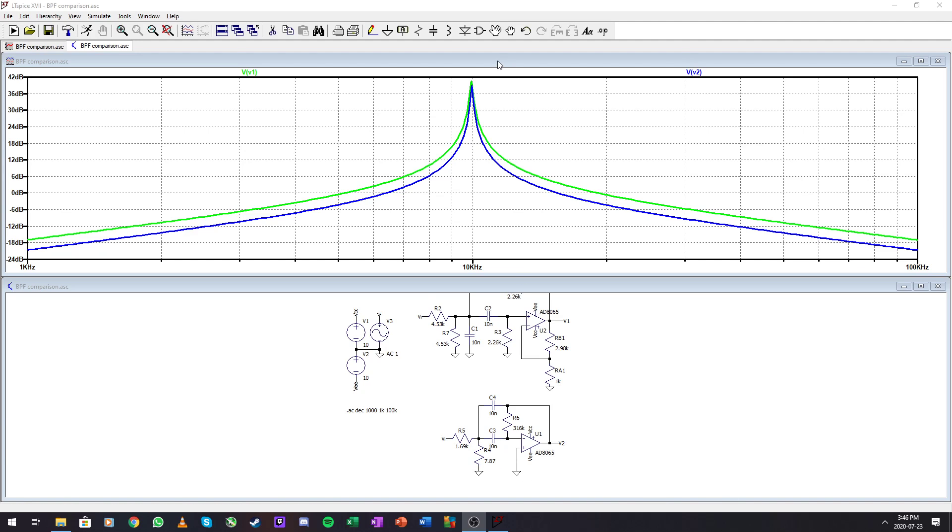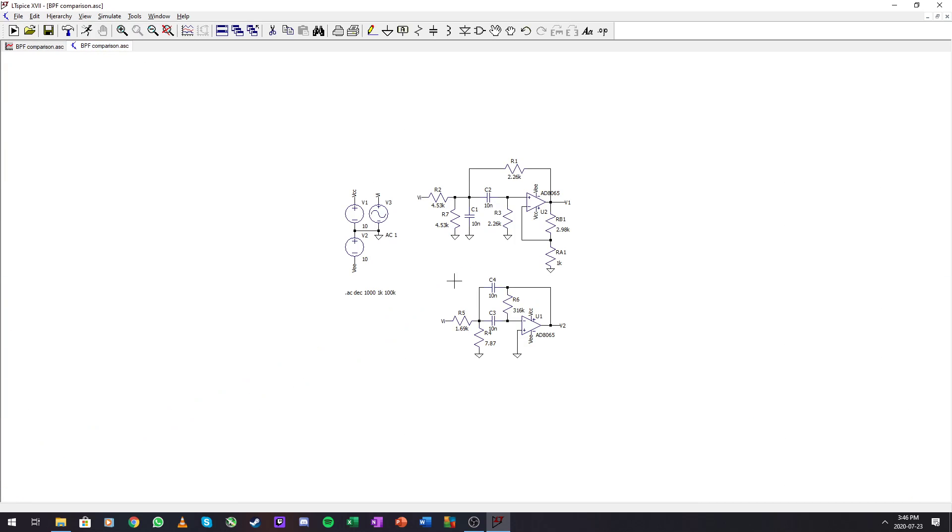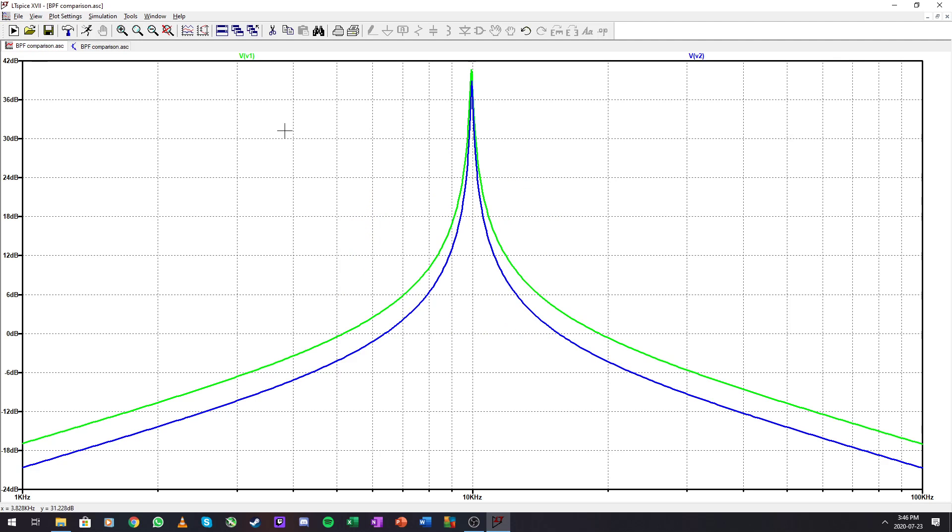I corrected this resistor value here to match with the previous simulation. Now we can see that if we could increase the gain a little bit, they will almost match perfectly. But the multi-feedback is cutting off a little bit quicker than the KRC. But they are really similar. So if you need a bandpass filter, I would rather go with the multi-feedback because it's not going to change into an oscillator at high Q factors like the KRC bandpass filter.